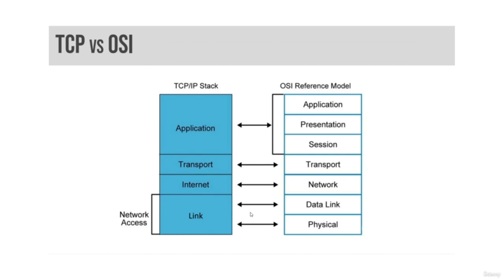The host-to-host transport layer, or more commonly called simply the transport layer, connects the internet layer to the application layer. It is where applications are addressed on a network via ports. TCP and UDP are the two transport layer protocols used in TCP/IP.